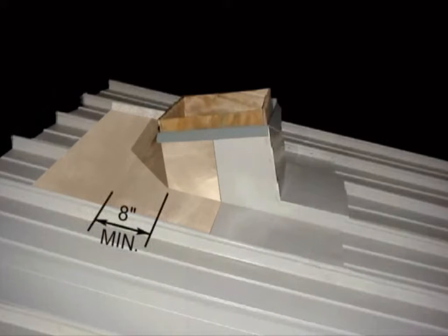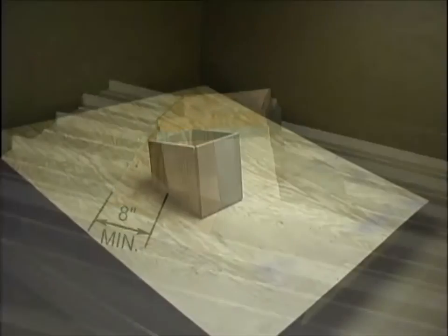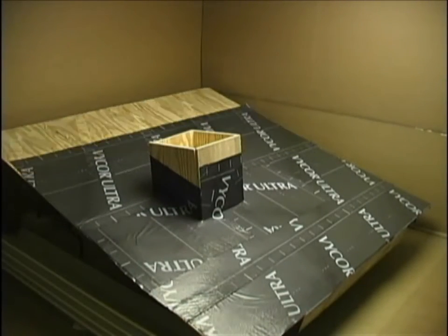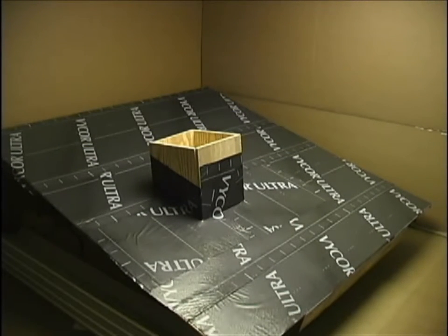Leave a minimum of 8 inches between the curb and the upslope panels. Install an approved ice and water shield from the eave to the penetration. Continue the ice and water shield 6 feet around the sides and above.